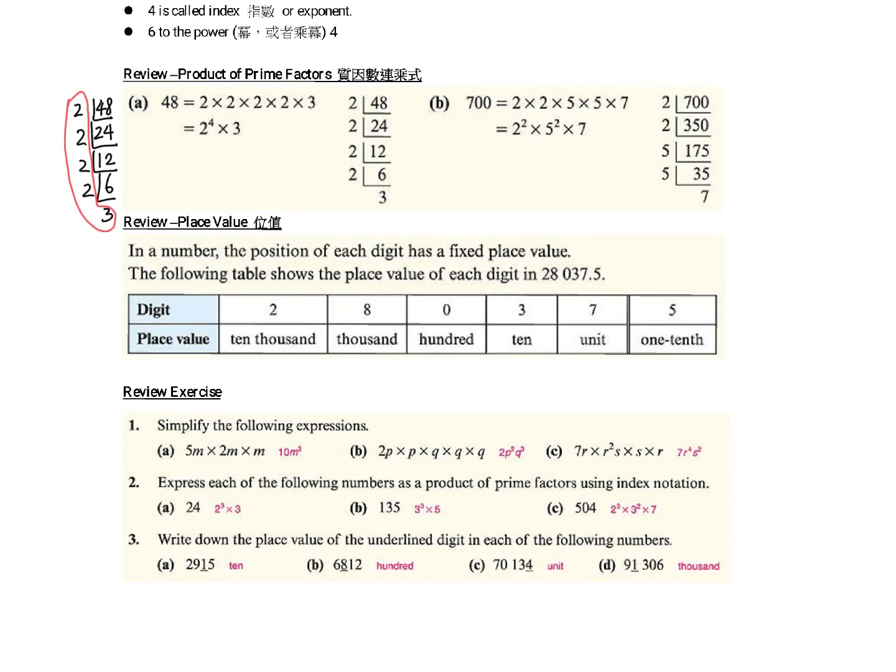What about place value? You may have learned this in form 1 or form 2 when you studied approximation and error. For example, correct to the nearest integer, correct to the nearest ten, correct to the nearest hundred. The place value positions are hundred, ten, unit (the ones place), and tenth.